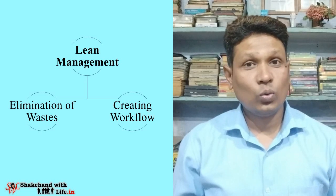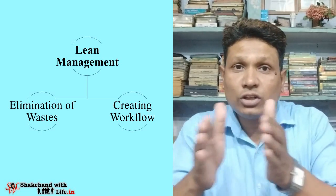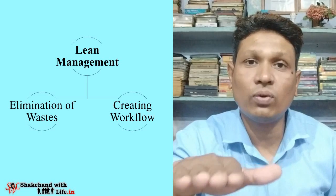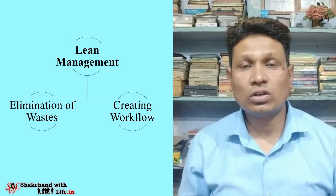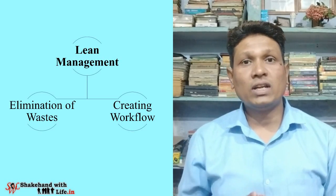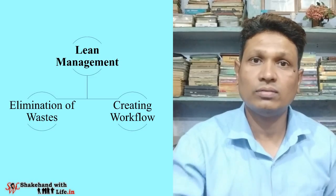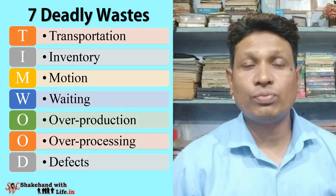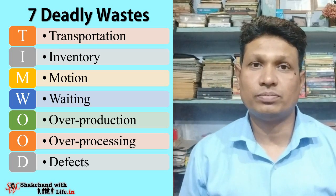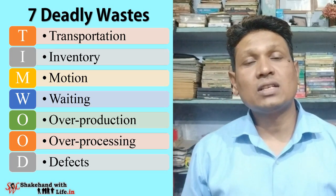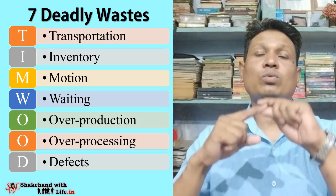What is lean? Lean is a systematic way of elimination of wastes and creating workflow in the production system. The emphasis is on two things: elimination of wastes and creating workflow. Elimination of wastes means elimination of the seven deadly wastes in the production system, and these seven deadly wastes are known as TIMWOOD.